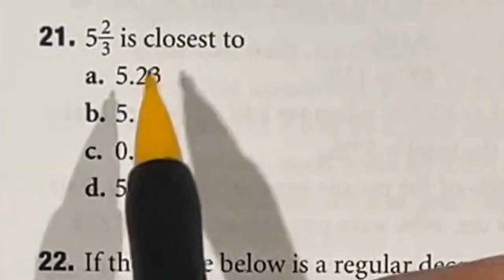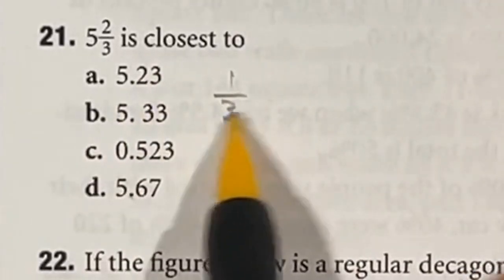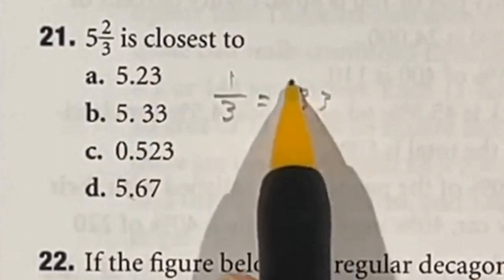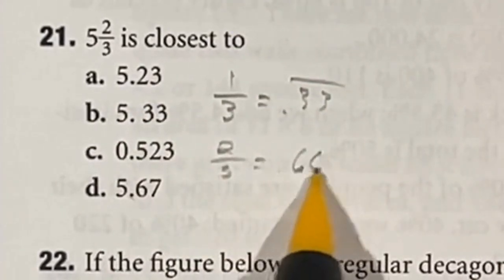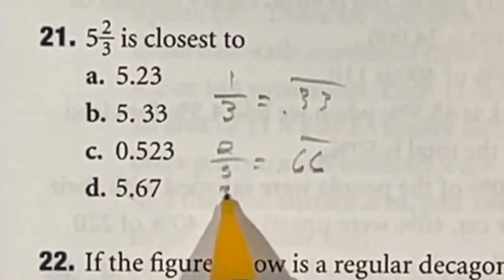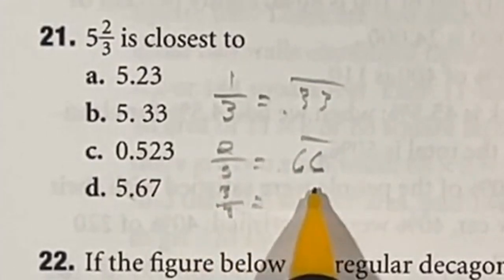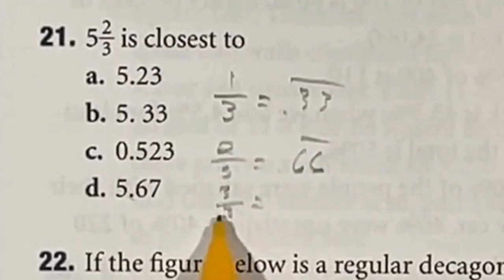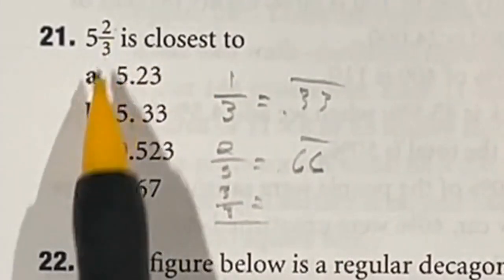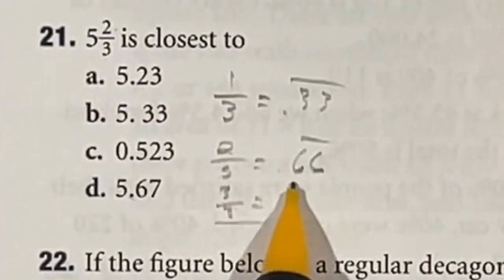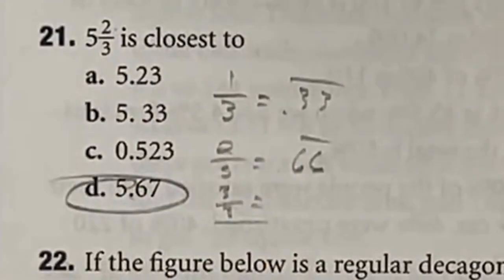So thirds are actually pretty easy to work with. One third is going to be equal to 0.33 repeated because two thirds then would be equal to 0.66 repeated and then three thirds is going to be equal to 0.99 repeated which is also equal to one. So if I'm looking at this what is this closest to? Well five and two thirds would be five and 0.6 repeated so the answer here is D.